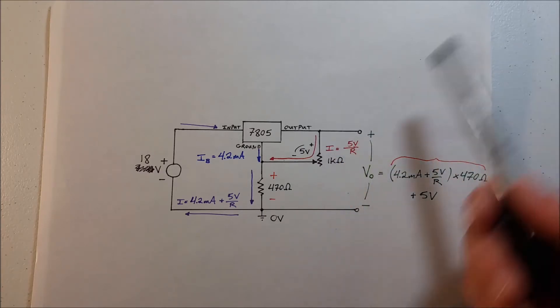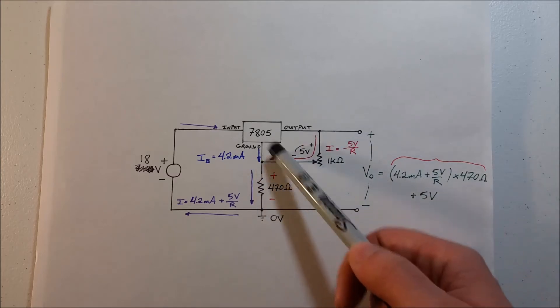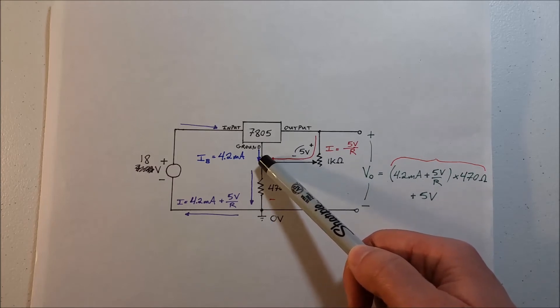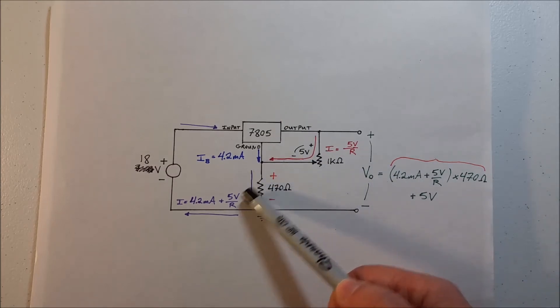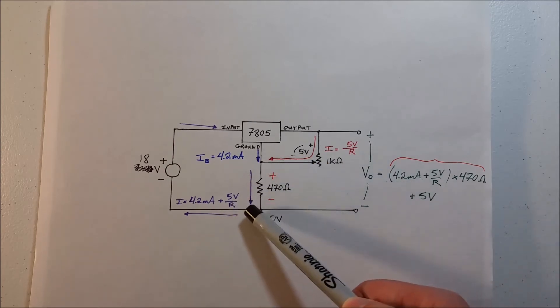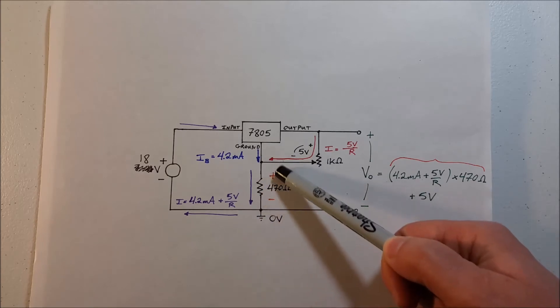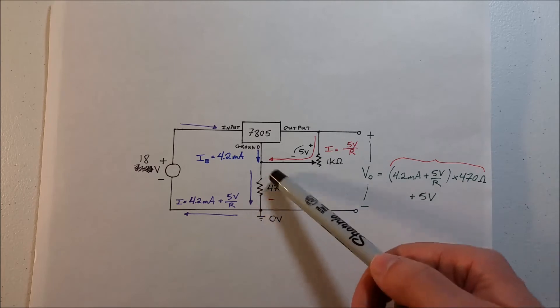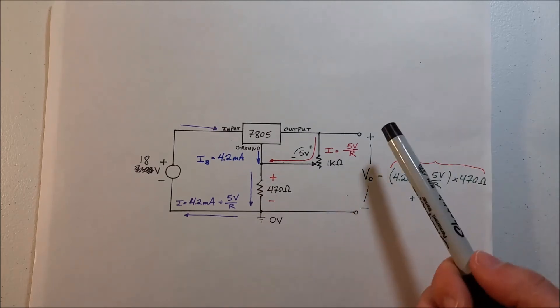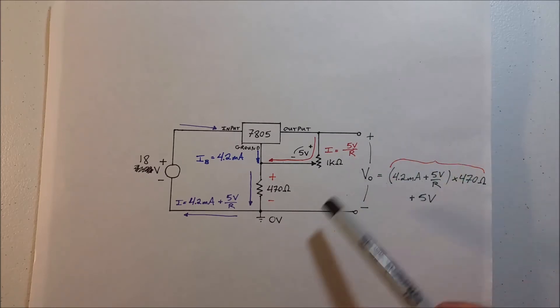Now this red current and the blue bias current combines at this node, KCL, to form this purple current here: 4.2 milliamps plus 5 volts divided by whatever the potentiometer is set to. And this current goes through our 470 ohm resistor which develops its own voltage, V equals IR. Voltage across this resistor is equal to the purple current times 470.